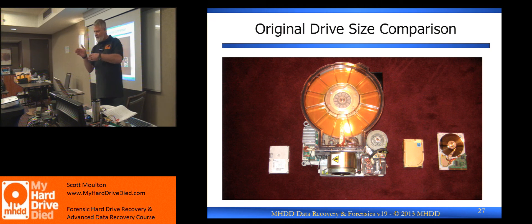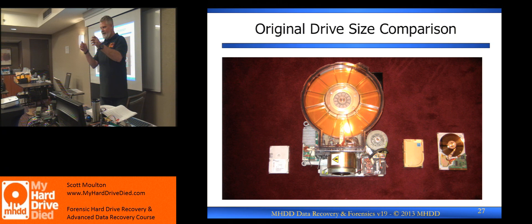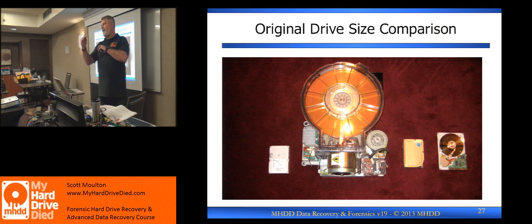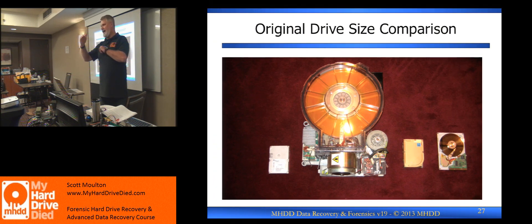There was no three and a half inch bay originally in all of these systems. That was an add-on later, and that's why they had rails. They added rails to make a three and a half inch fit. They were all five and a quarter full height bays because the very first hard drives and floppy drives — IBM designed the very first floppy drives, and Alan Shugart created the very first hard drive.